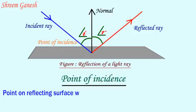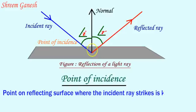Point on reflecting surface where the incident ray strikes is known as point of incidence.